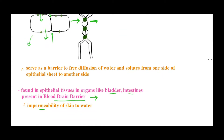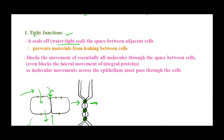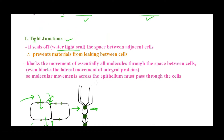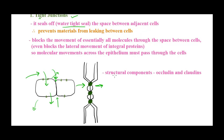So tight junctions play a very important role in stopping any leakage or free flow of materials between cells. Structurally, tight junctions are made up of occludin and claudins. We can go into more detail about this some other time, but those are the key structural components of tight junctions.